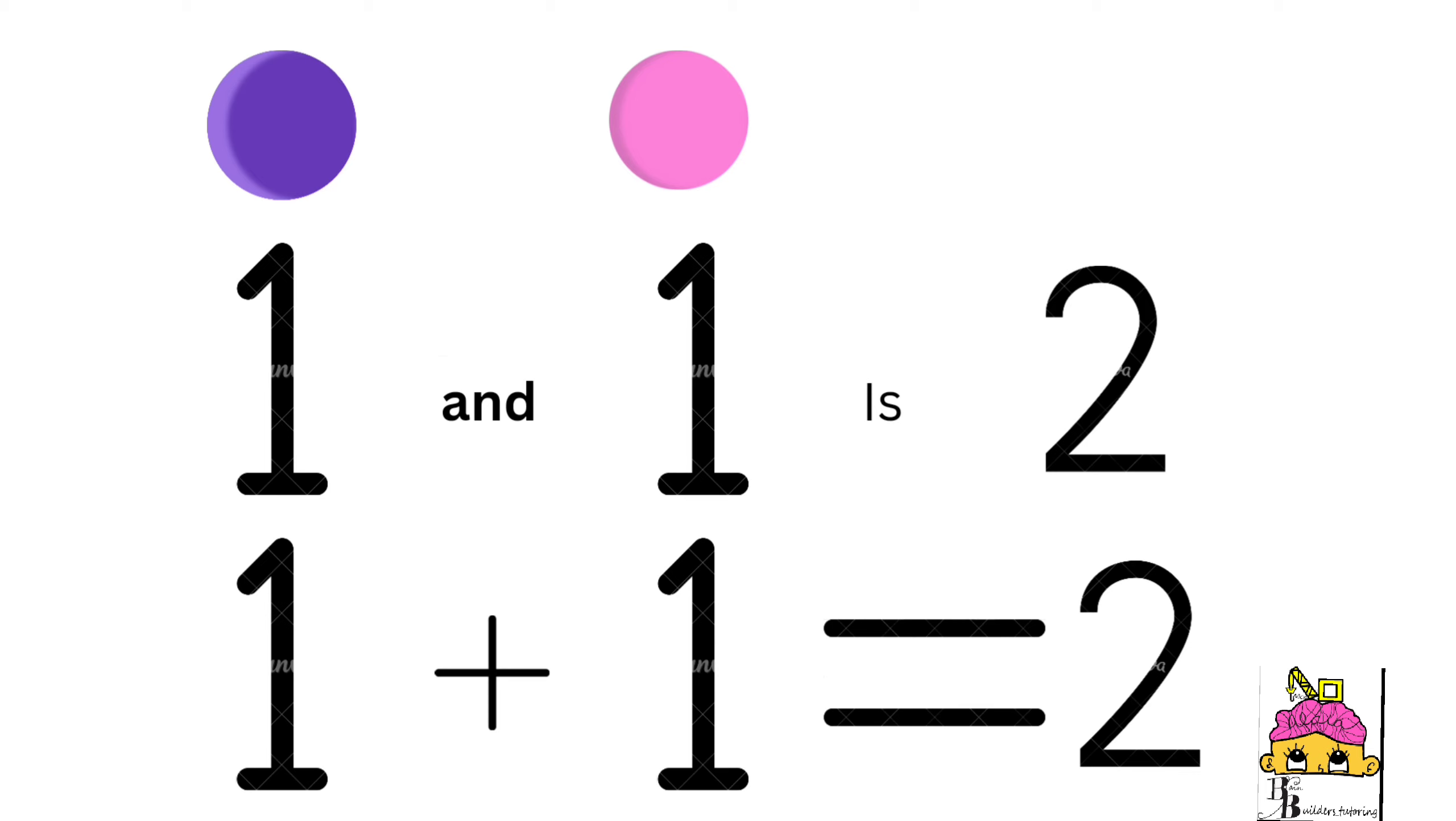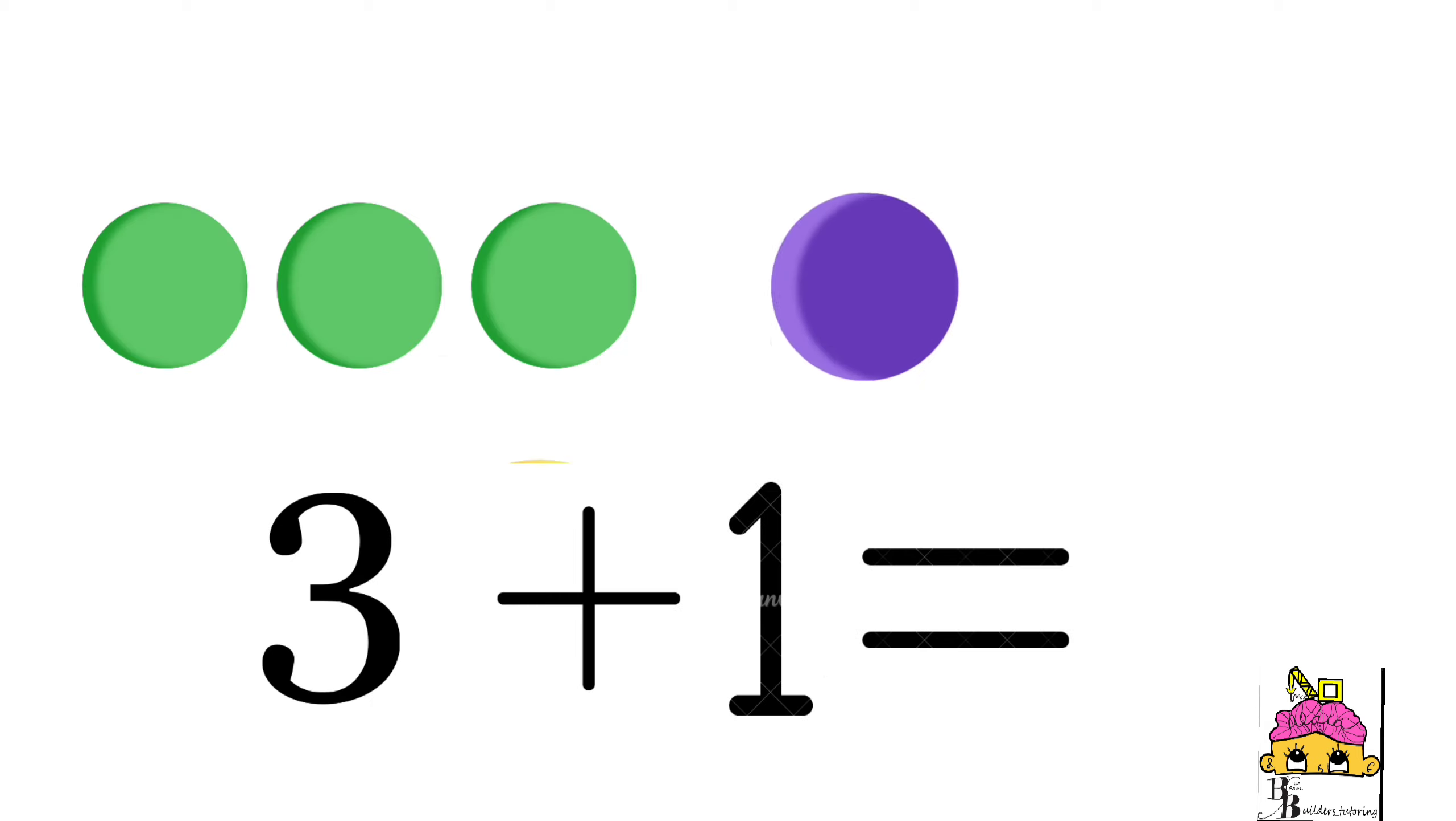So we have one purple counter and one pink counter. So that represents 1 plus 1 and it's now equal to 2. That's how it's going to look from now on.